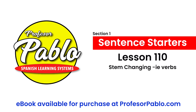Now we're talking about verbs that have an E-to-IE stem change. Look at the verbs on the left: cerrar (to close), pensar (to think), empezar (to start), comenzar (to start), sentarse (to sit down), and despertarse (to wake up). All six of those verbs are AR verbs.